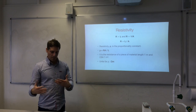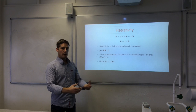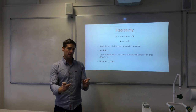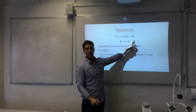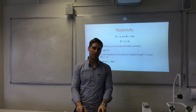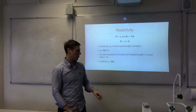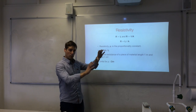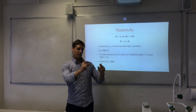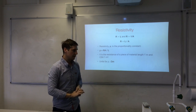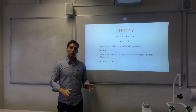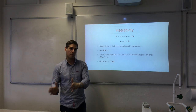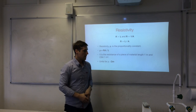Resistivity allows comparison between materials, independent of length and cross-sectional area. Electrical engineers refer to tables of resistivity values to choose the right material for their purposes — for example, comparing how good a conductor copper is compared to aluminium. So rho is the intrinsic property of the material, independent of its dimensions.